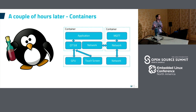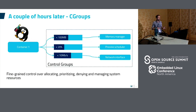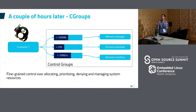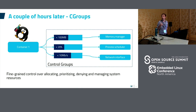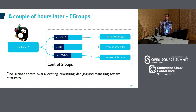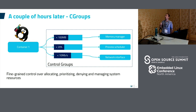One advantage of doing that is that for each container you can use cgroups. For the container running the Qt application, you could limit the memory usage to 100 megabytes. For the container running the MQTT stack, you could limit the bandwidth. From a security standpoint, if someone manages to break into one of your containers, they'll be limited by cgroups and will never be able to use more than 10 megabits per second.